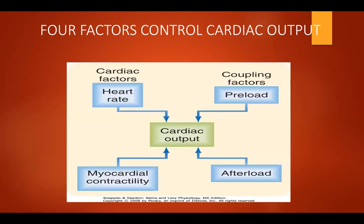There are four factors that control the cardiac output: heart rate, preload, myocardial contractility, and afterload. The preload is the end-diastolic volume of the right and left ventricle. The afterload is the pressure on the wall of the left ventricle during ejection, or the load against which the heart contracts to eject blood. These factors are mutually dependent on the behavior of the heart rate and the vasculature.